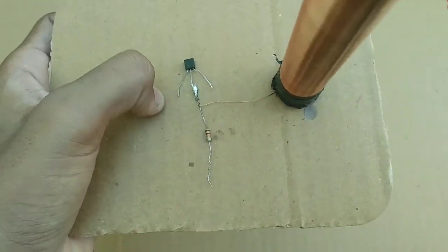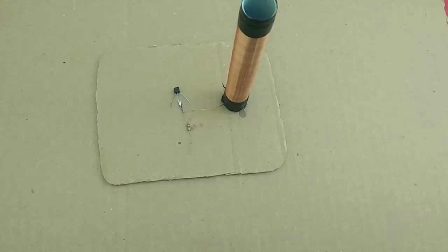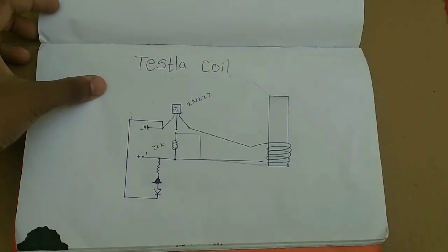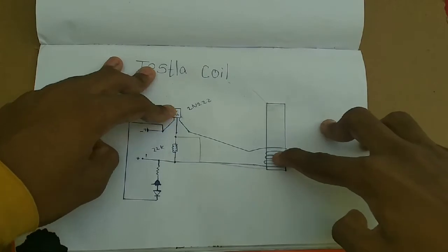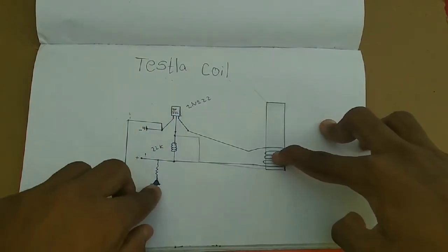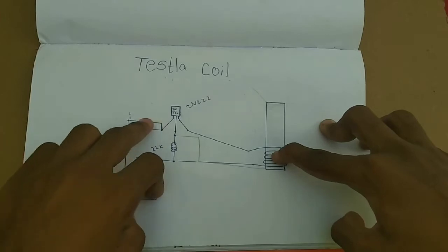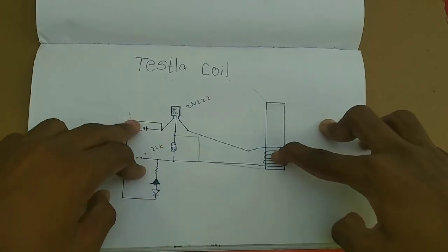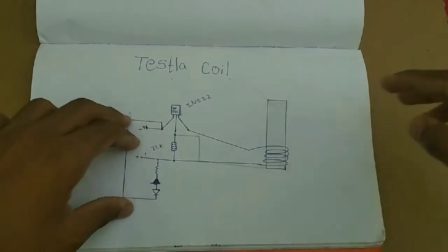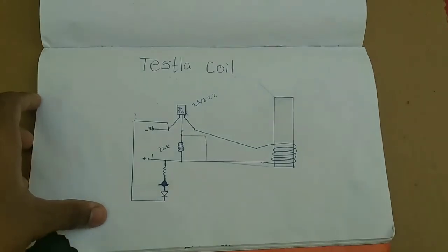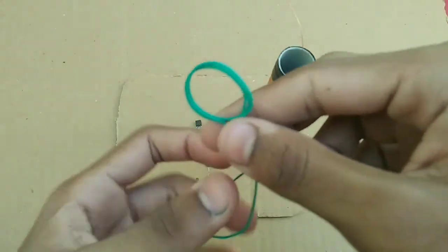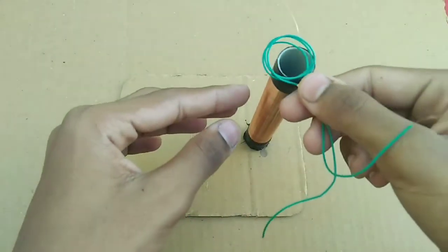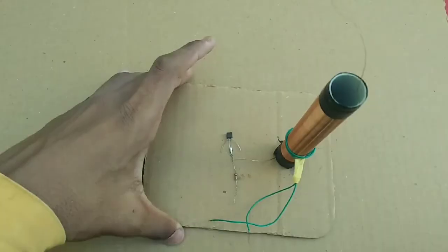Here is the diagram: transistor, resistor, and the coil - this is the primary coil. This coil should have exactly three turns. If you don't make three turns, the coil won't work properly.